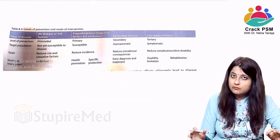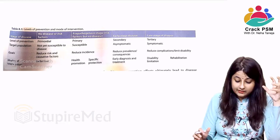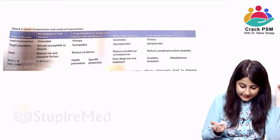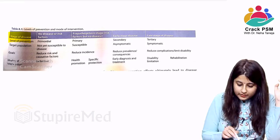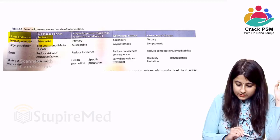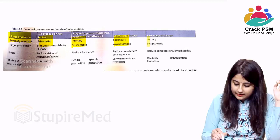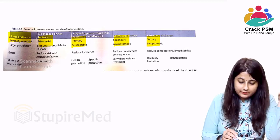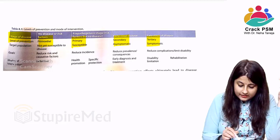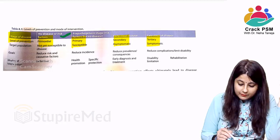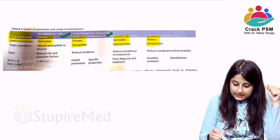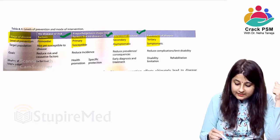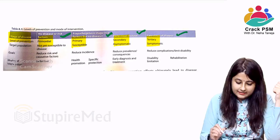Looking at a figure to understand levels of prevention more clearly: primordial prevention is applied when there is no disease or risk factor; primary prevention is in the pre-pathogenesis stage when risk factor is present but no disease; secondary prevention is applied in the early stage of disease; and tertiary prevention is in the late stage. Target population: primordial — not yet susceptible; primary — susceptible; secondary — asymptomatic; tertiary — symptomatic.